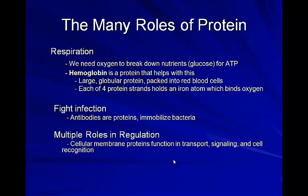Hemoglobin is a protein found inside our red blood cells. It has four iron centers, and that iron binds readily to oxygen, allowing it to carry oxygen from lung tissue through the blood to body tissues, then release that oxygen and pick up carbon dioxide to bring back to the lungs. Proteins also make up our antibodies. B lymphocytes — or B cells — produce antibodies, which are Y-shaped proteins that bind and immobilize bacteria, forming a key component of our immune system.